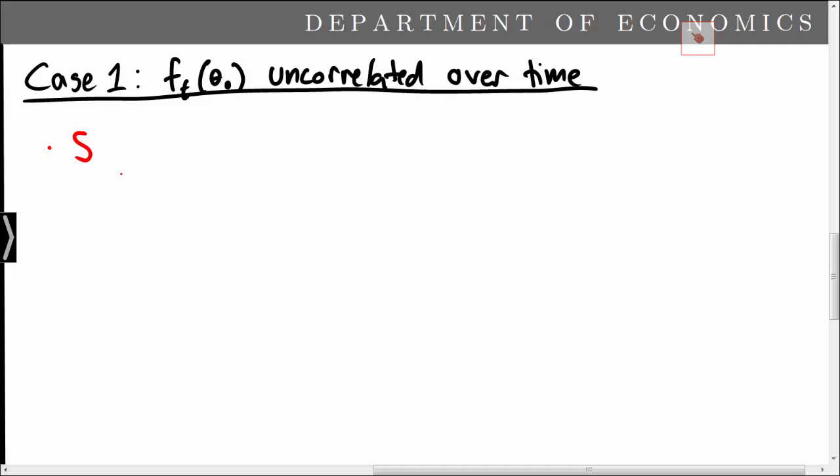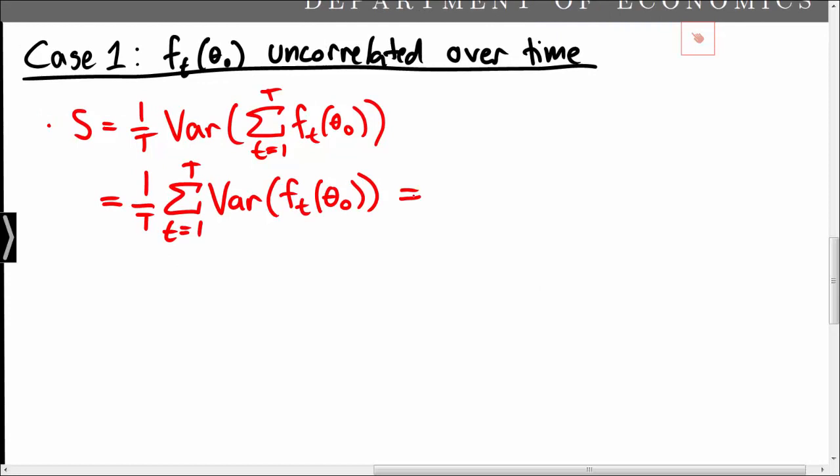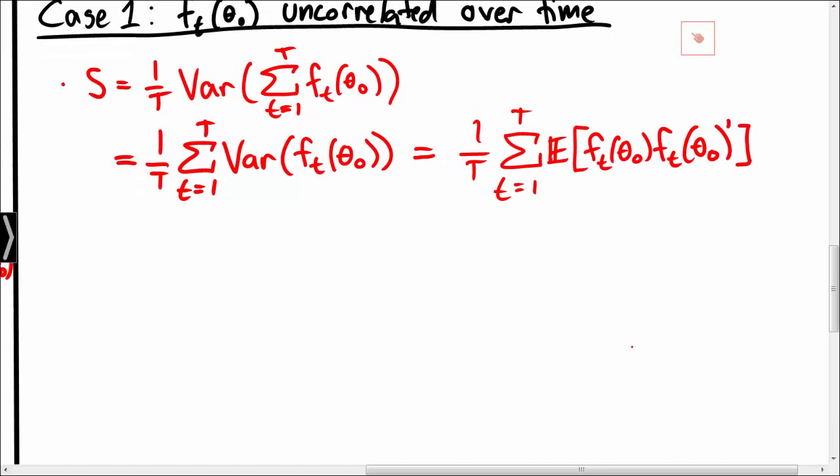We recall that S was simply 1 over T times the variance of the sum of the Ft's. Since Ft is uncorrelated over time, the variance of the sum of the Ft's is the same as the sum of the variances. Using the fact that Ft has mean 0, we simply end up with the average of the expectation of Ft squared.